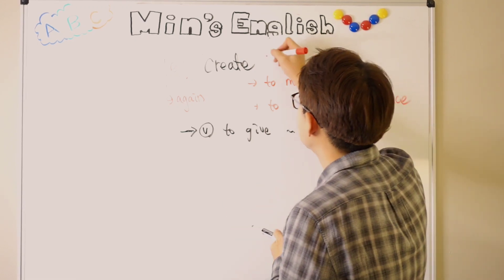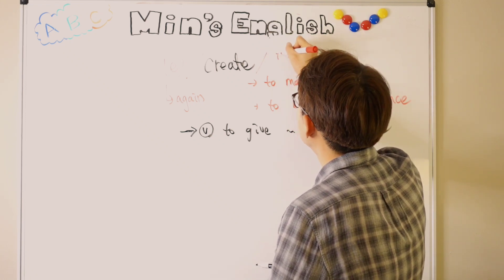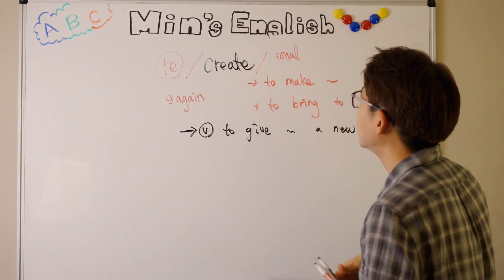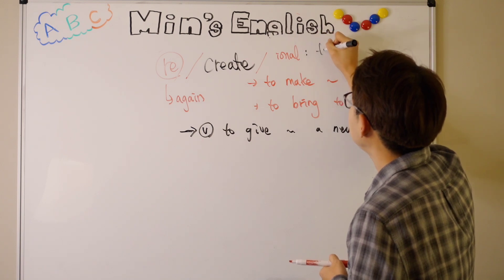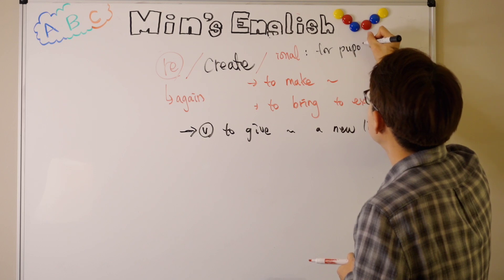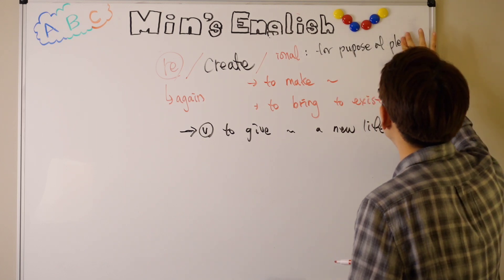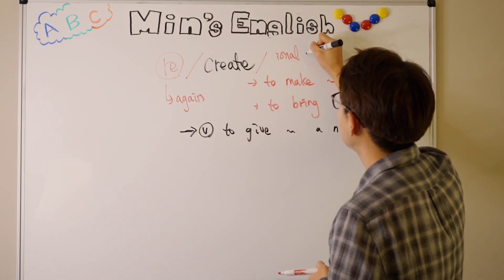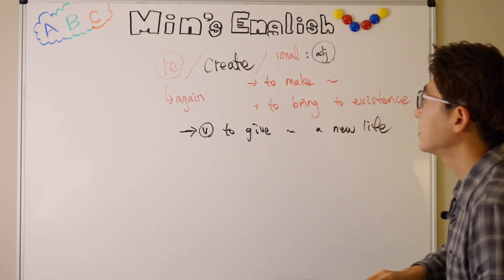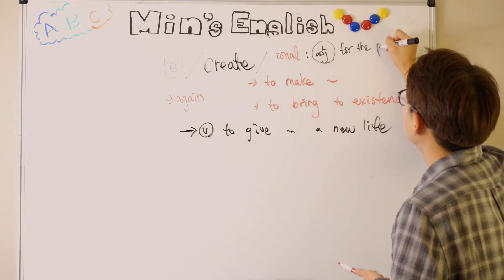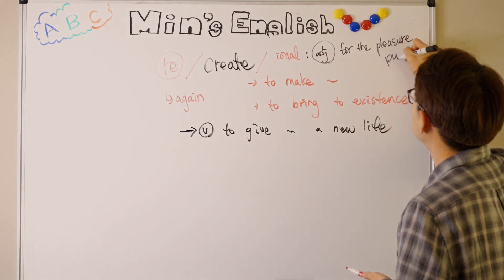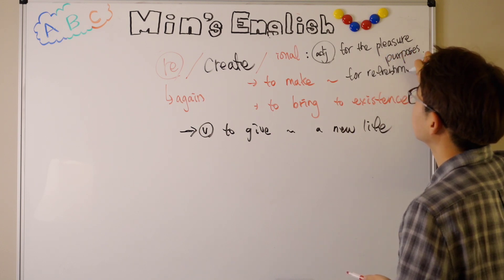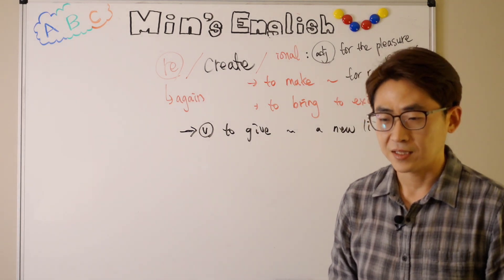This word is used almost always as an adjective by adding '-ional': 'recreational.' Recreation is the noun form, and 'recreational' means something used for the purpose of pleasure or refreshment. So 'recreational' is used as an adjective meaning for pleasure purposes or for refreshment. Recreational is a word that we use a lot.